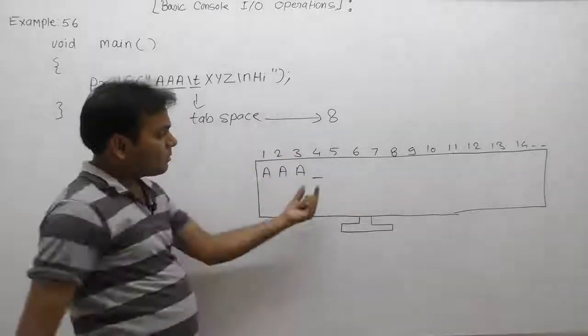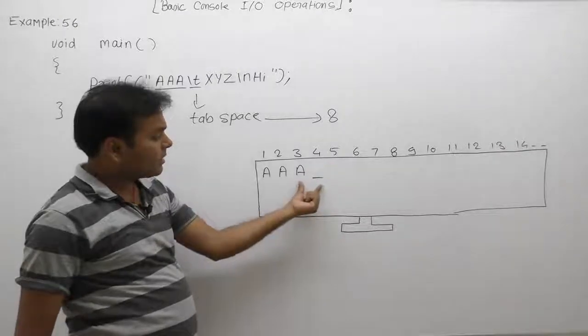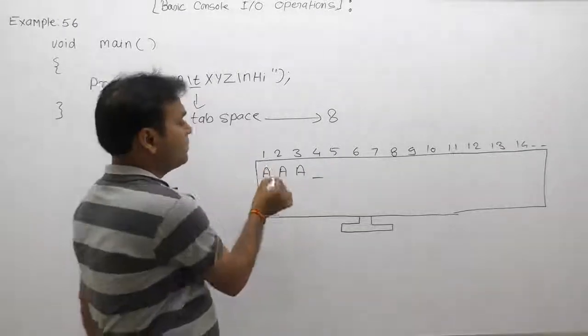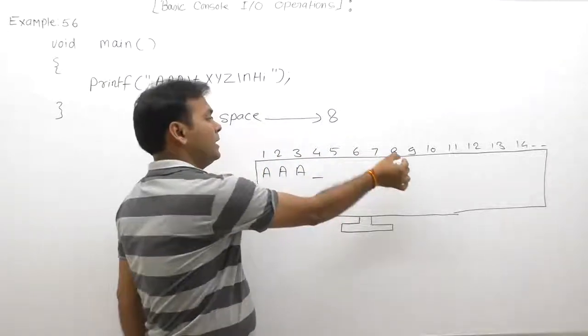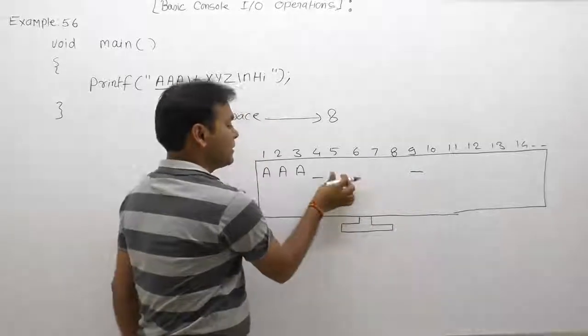Like that: one, two, three - the current position of the cursor is four. Still it will count from the beginning to the first multiple of eight: one, two, three, four, five, six, seven, eight. After that, according to \t, the cursor will move.